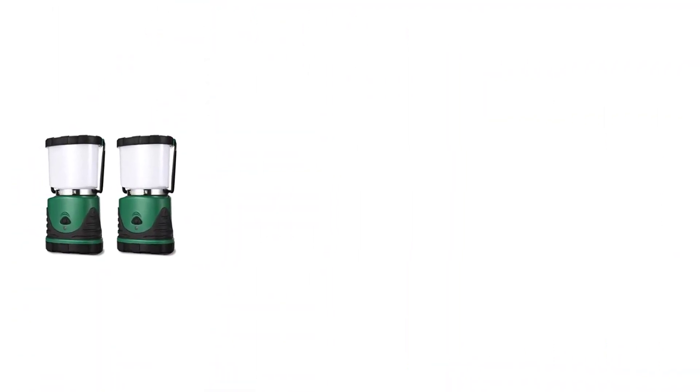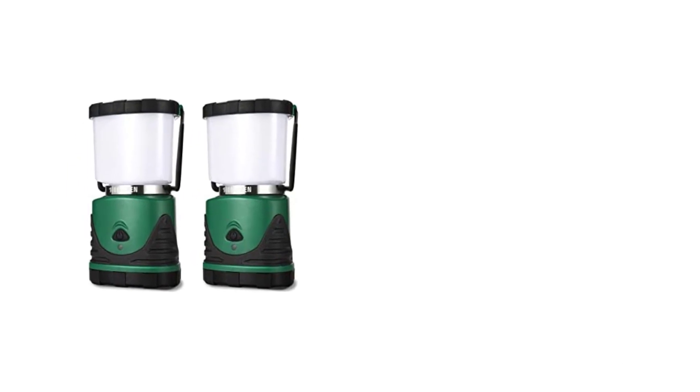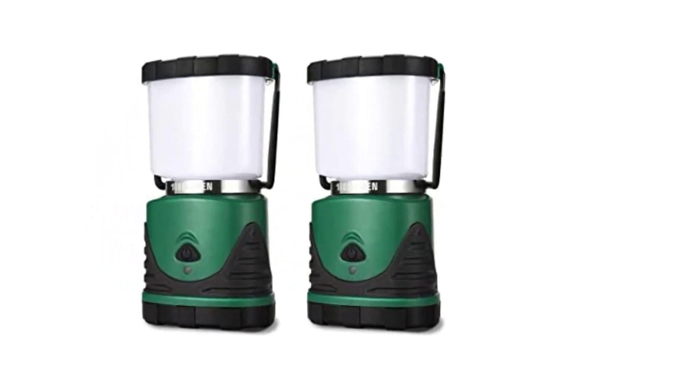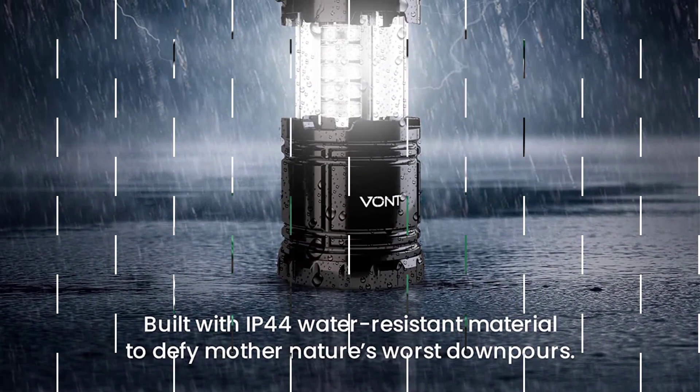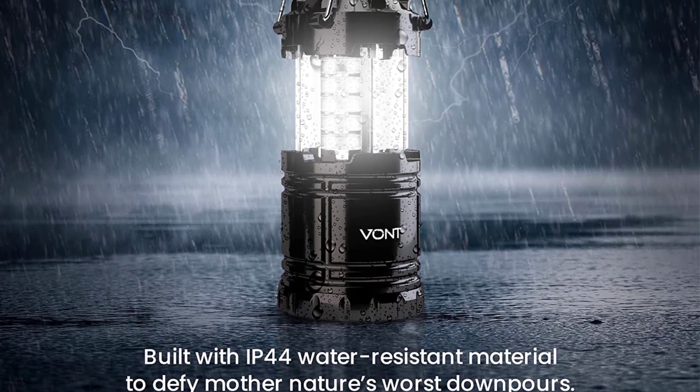High-grade ABS and PP are used to construct each of the light lamps. Consequently, you don't need to be concerned about the light lamps construction. Each lamp contains 30 LED lights producing up to 140 lumens.